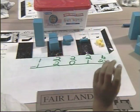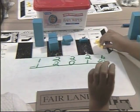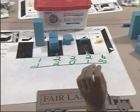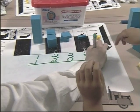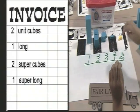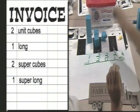When a Fairlands truck arrives with an invoice, students load the truck with the blocks from the game board. This often requires trading down to have enough of some block to meet the requirements of the invoice.